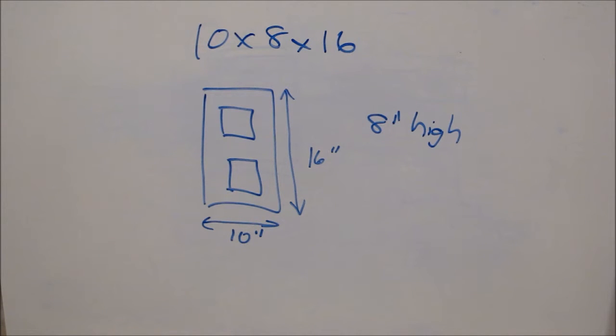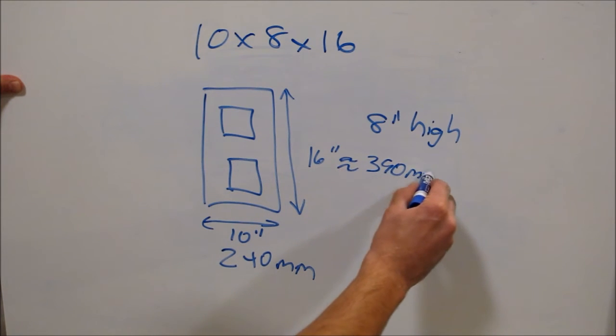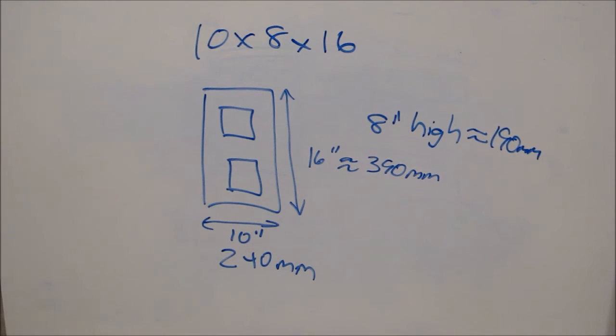Interestingly enough, they're actually metric, and if you measure them with a metric tape measure, you'll find that they're about very close to 240 millimeters, at least as close as I can measure. And the 16 inches is 390 millimeters, and the height is 190. So they're actually smaller than the 10 by 8 by 16, and they say they make them smaller because by the time you add the mortar onto them, they're actually 10 by 8 by 16.